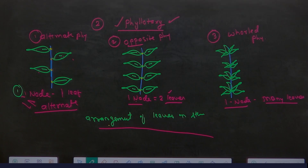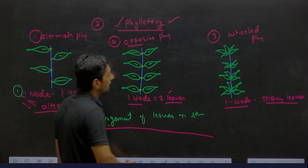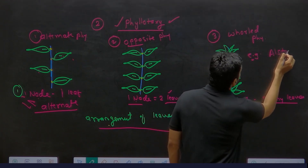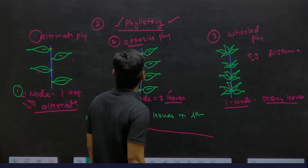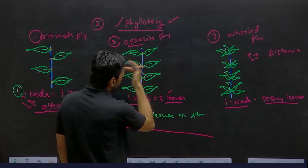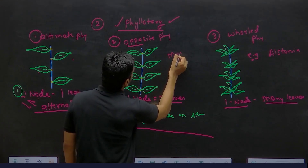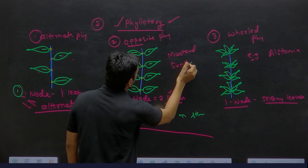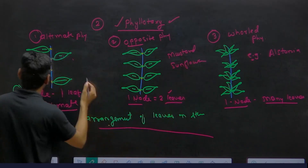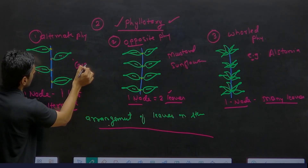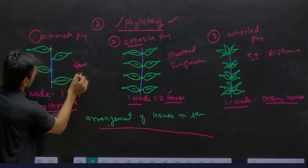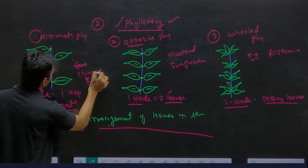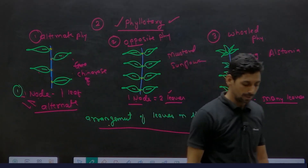Are there some examples for these? In case of whorled phyllotaxy, the common example is Alstonia. In opposite phyllotaxy, mustard and sunflower are examples. Alternate phyllotaxy example will be China grass. Write it down.